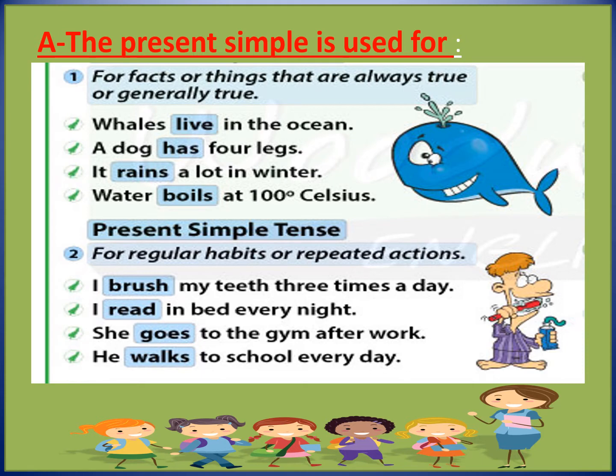Also, you know that it rains a lot in winter — that's a fact and it's true. Here in the fourth example: water boils at 100 degrees Celsius. Also, the present simple tense is used for regular habits or repeated actions. When actions are repeated many times, we use the present simple tense.